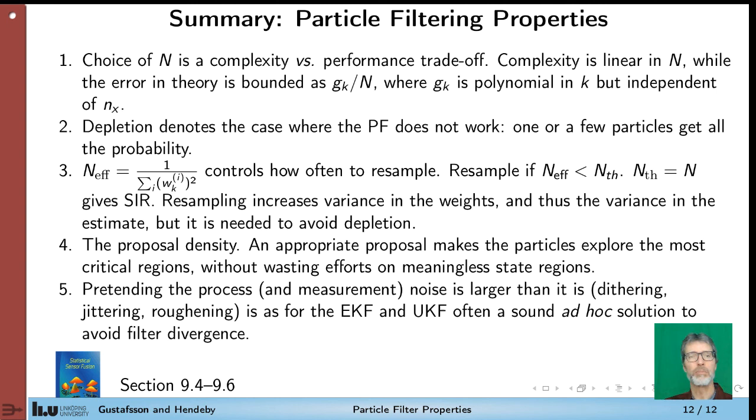So to sum up, the choice of N is the trade-off between complexity and performance. So in theory the larger number N you choose the better result you will get. But the approximation error of your filtering density is also proportional to something called g_k which is polynomial in time but in theory independent of the state dimension but in practice it is. Depletion denotes the case where the particle filter does not work and I think the example I showed in the beginning is clear enough. To monitor the performance of the particle filter we compute the efficient number of particles. You also noted that resampling is not only good, it also increases the variance of the weights which is a bad thing. So the compromise is to resample only when needed and when needed is here defined as when the efficient number of particles is less than the threshold.